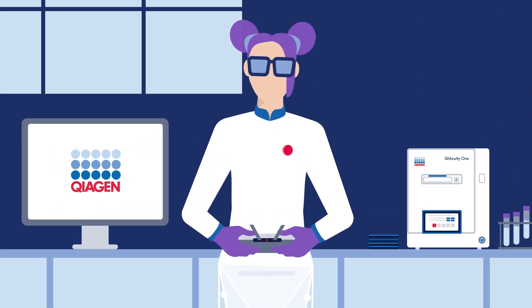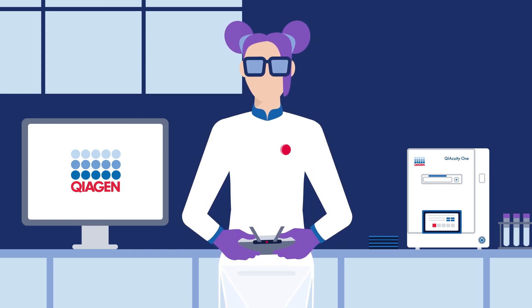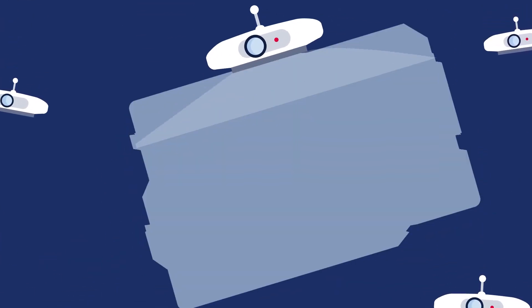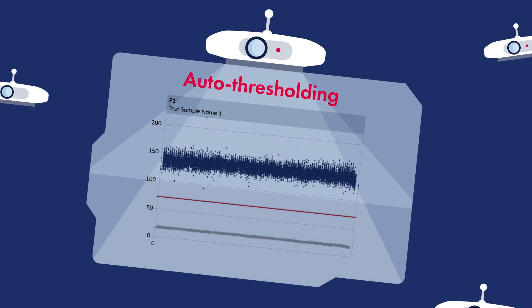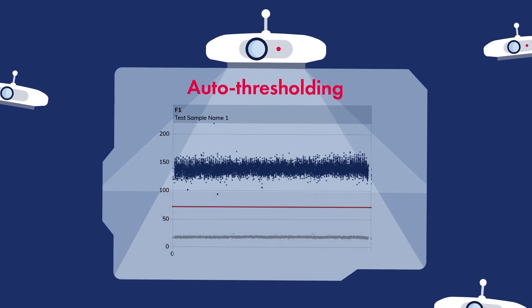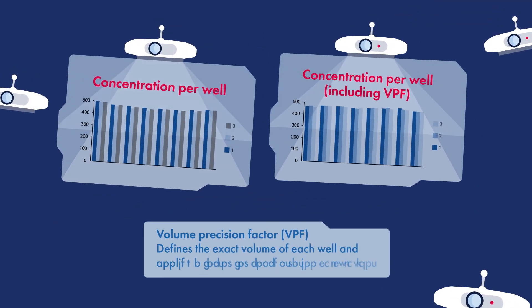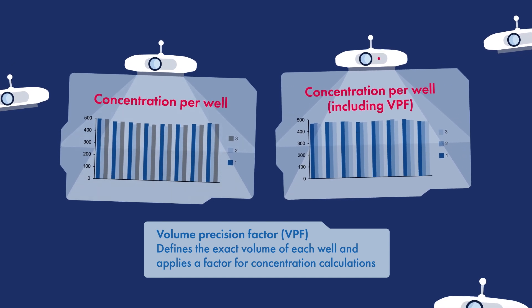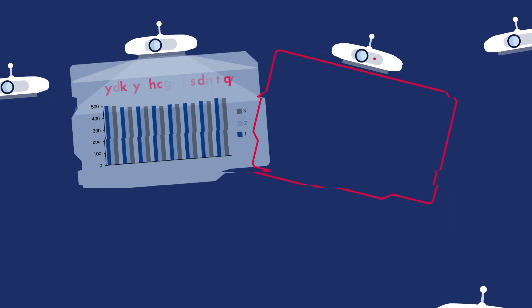Apart from robust instrumentation and quality assays, successful dPCR results are attributed to auto-thresholding in line with the dMIQE guidelines to confidently separate positive from negative partitions and deliver consistently accurate results, and volume precision factor — or VPF — that addresses well-to-well and batch-to-batch variability, improving quantification precision even further.